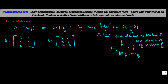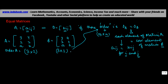If you see the order of A, the number of rows is 3 and the number of columns is 2. Similarly, the number of rows of B is 3 and the number of columns is 2. So condition one — equal order — is satisfied. The second condition says that each element of A must equal the corresponding element of matrix B.